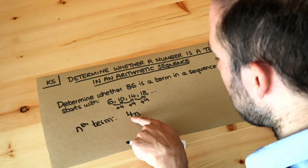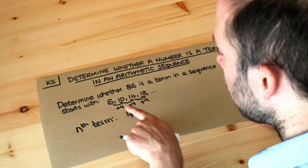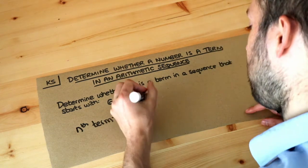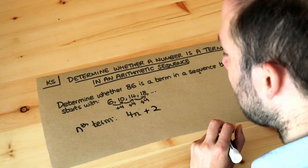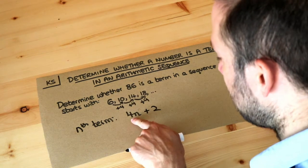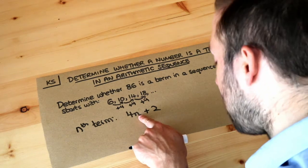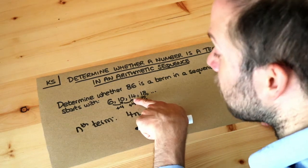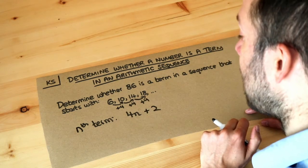So if we want the first term then four times one is four, but we don't want four as the first of the sequence, we want six, so we're going to have to add two. Let's just check that: if we want the third term of this sequence we do four times three, which is 12 plus two is 14, and that's right, the third term is indeed 14.